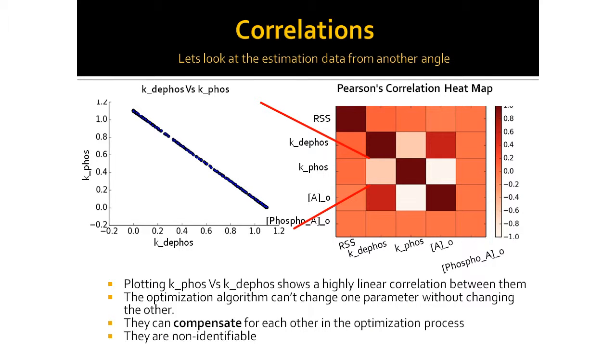Let's look at this data from another angle. On the right we have a Pearson's correlation heat map. On the left we have a scatter graph showing the plot of the parameter estimation runs for the phosphorylation versus dephosphorylation parameter. As you can see, there's a very high linear correlation — when the dephosphorylation parameter is low, the phosphorylation parameter is high and vice versa. What I think is happening is that the optimization algorithm can't change one parameter without changing the other. They compensate for each other and they are non-identifiable.